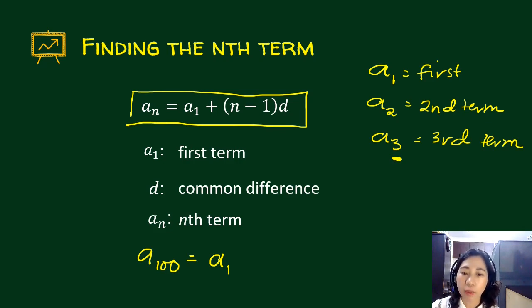Continuing with a sub 100, it's a sub 1 plus, what it says here, you subtract 1 minus 1 always. So in this case, this is 100. So 99 times d. And d is your common difference.